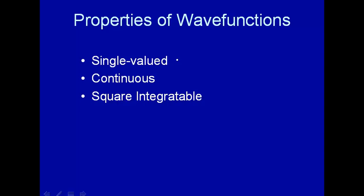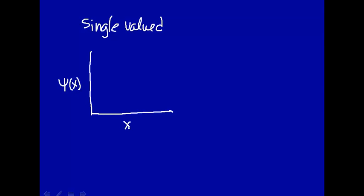First of all, the wave function must be single-valued. What does that mean? Well, a function is single-valued if, let's say this is the wave function and we'll make it a function of just one coordinate here to make things easy, we have something like this. This is single-valued here.